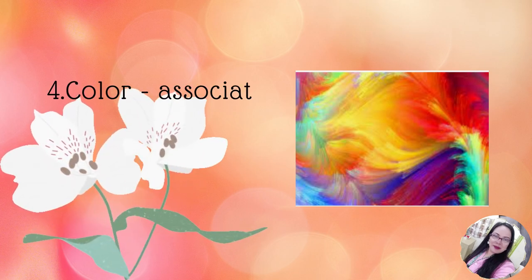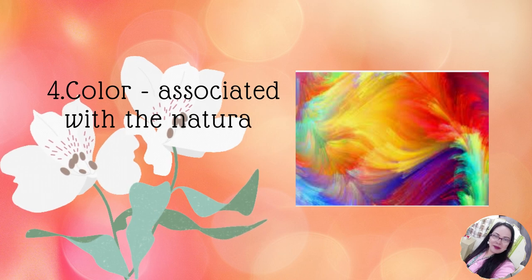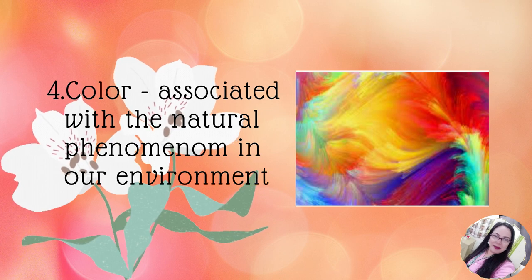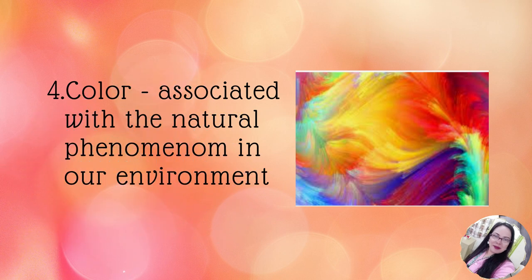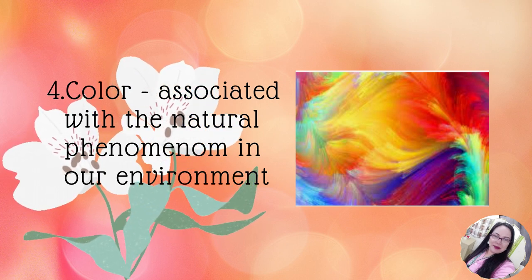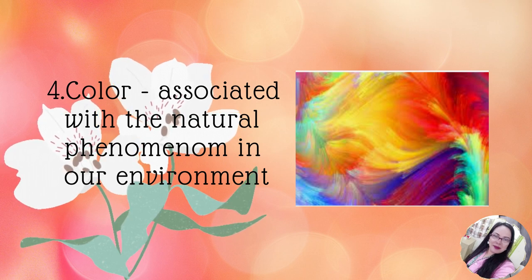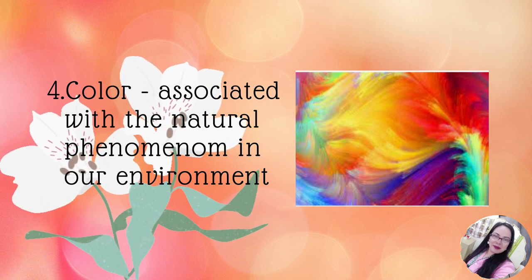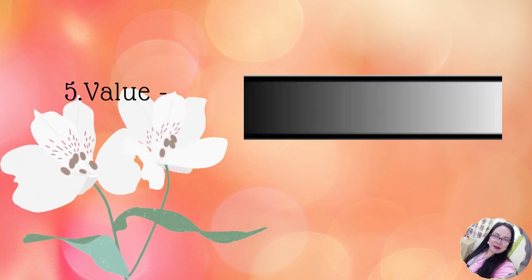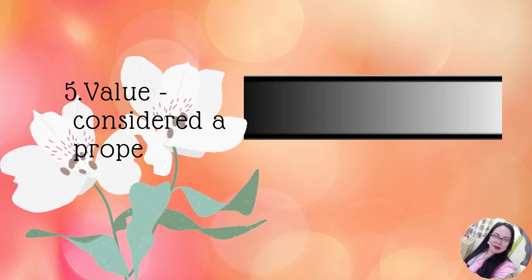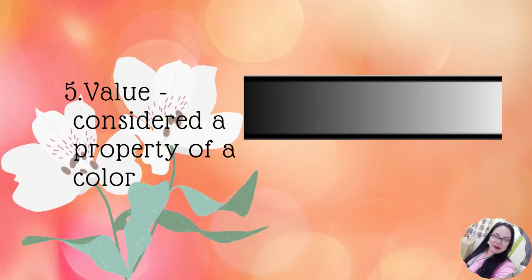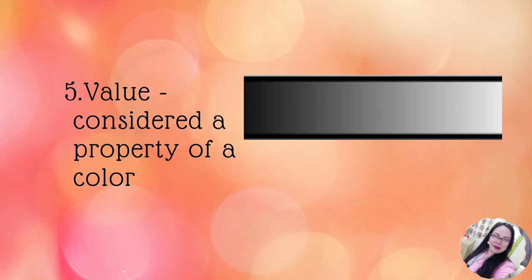Number four is color. In visual arts, color is associated with the natural phenomenon in our environment. Scientifically, when light passes through a prism, it will produce different views of different wavelengths. These colors may pertain to lightness, darkness, coolness, or warmth. Number five is value. In visual arts, value is considered a property of a color which pertains to its lightness or darkness.